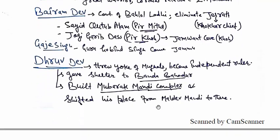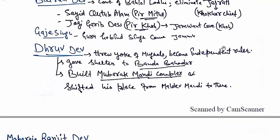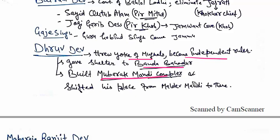The next important ruler is Dhruv Dev. He threw away the yoke of the Mughals and also gave shelter to Banda Bahadur against the Mughals. He also built the Mubarak Mandi Complex.